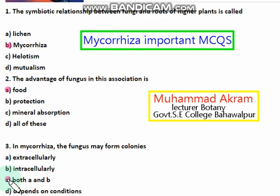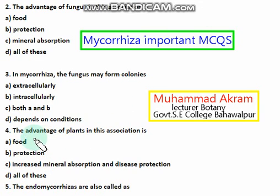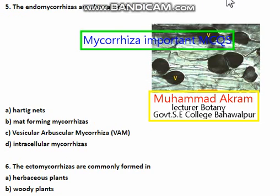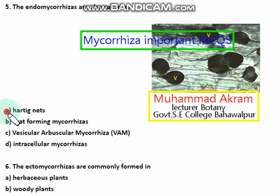The advantage of plants in this association is increased mineral absorption and disease protection — option C is the right answer. The endomycorrhizae are also called as — the right option is option A.